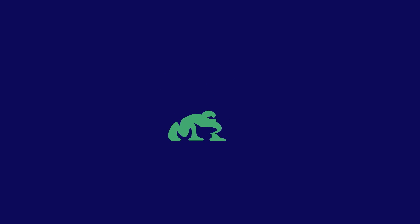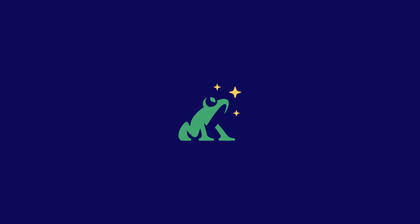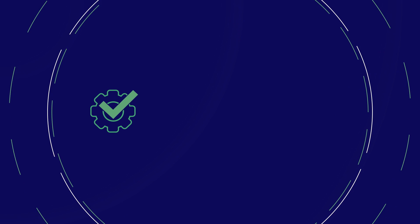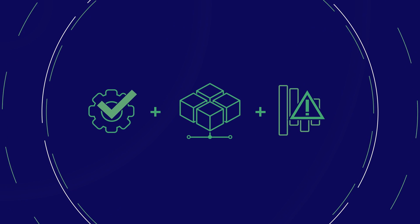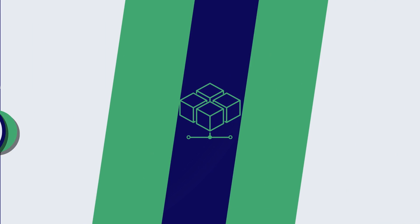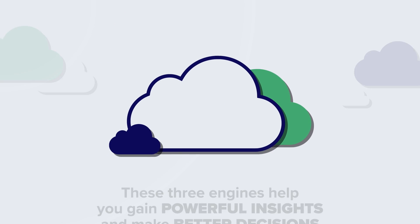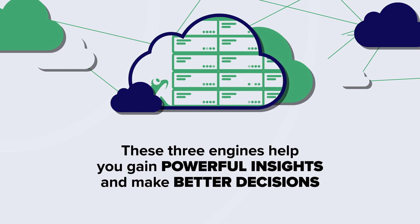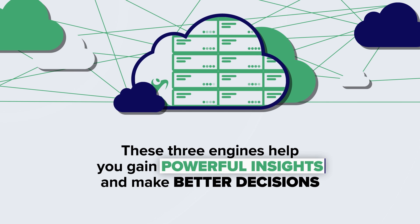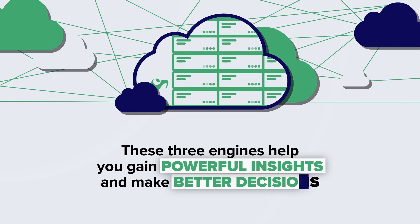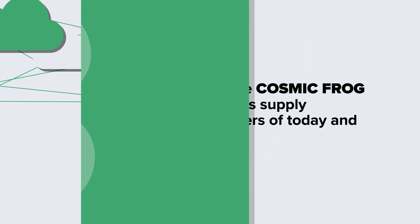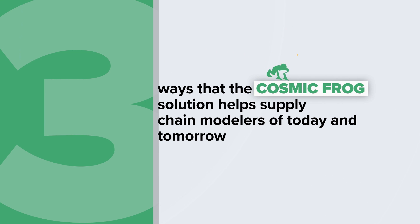Say hello to Cosmic Frog — the next generation of supply chain design software that combines optimization, simulation, and risk engines into one cloud-based intuitive solution. Together, these three engines help you gain powerful insights and make better decisions. Here are three ways that the Cosmic Frog solution helps supply chain modelers of today and tomorrow.